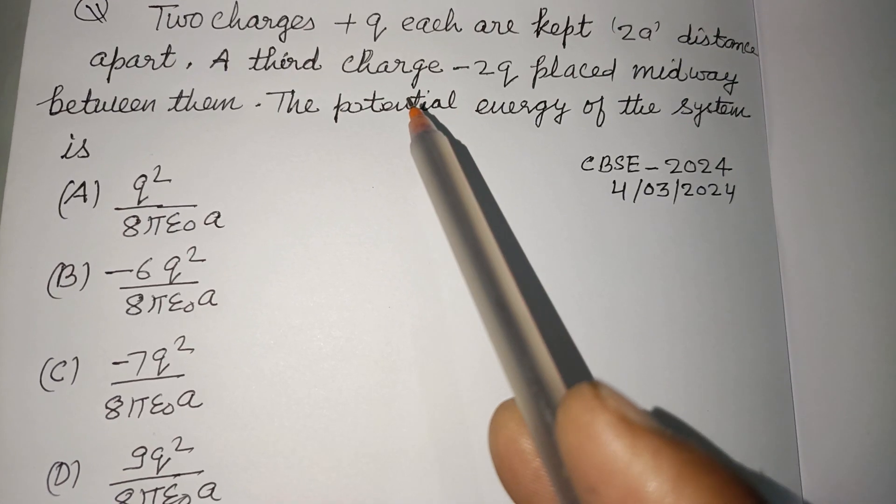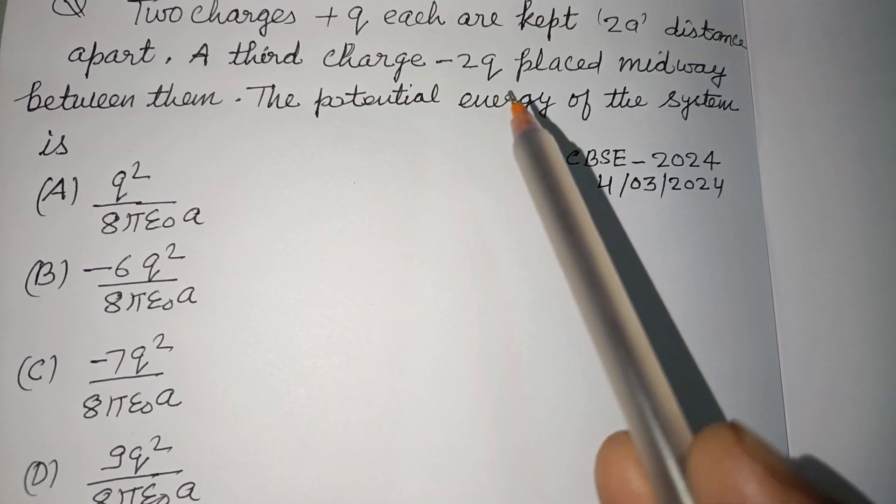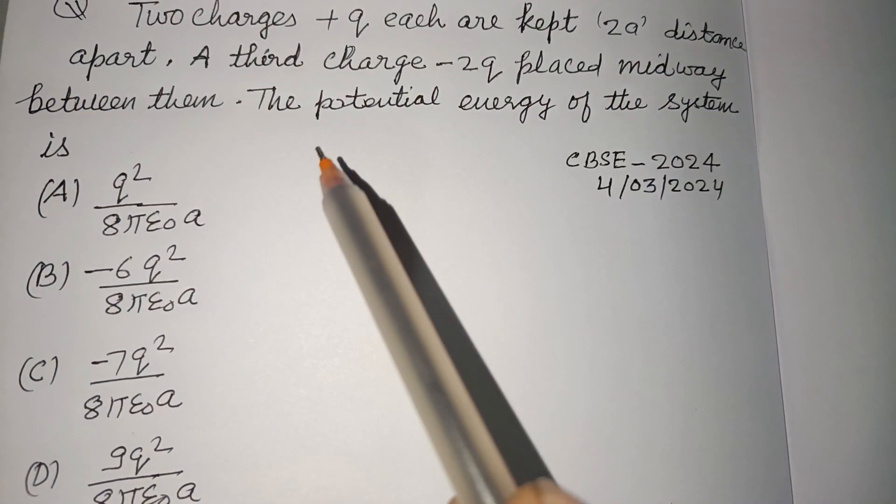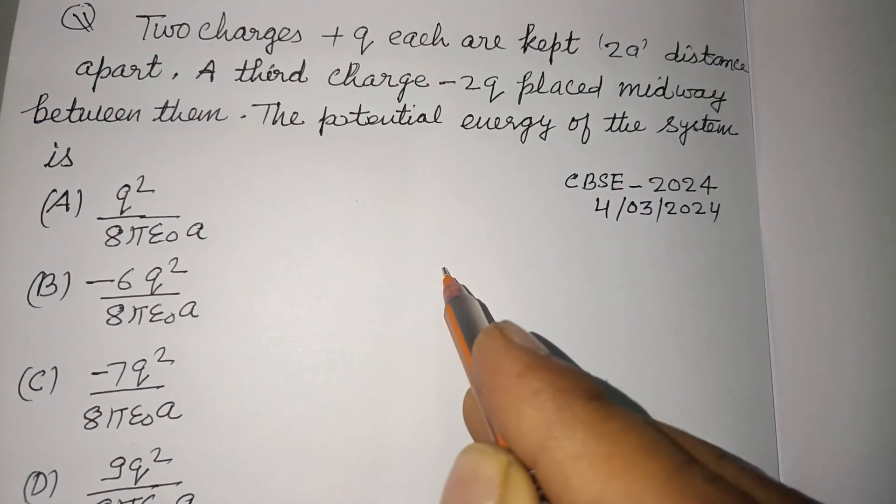Two charges +Q each are kept 2a distance apart. A third charge -2Q is placed midway between them. The potential energy of the system is...